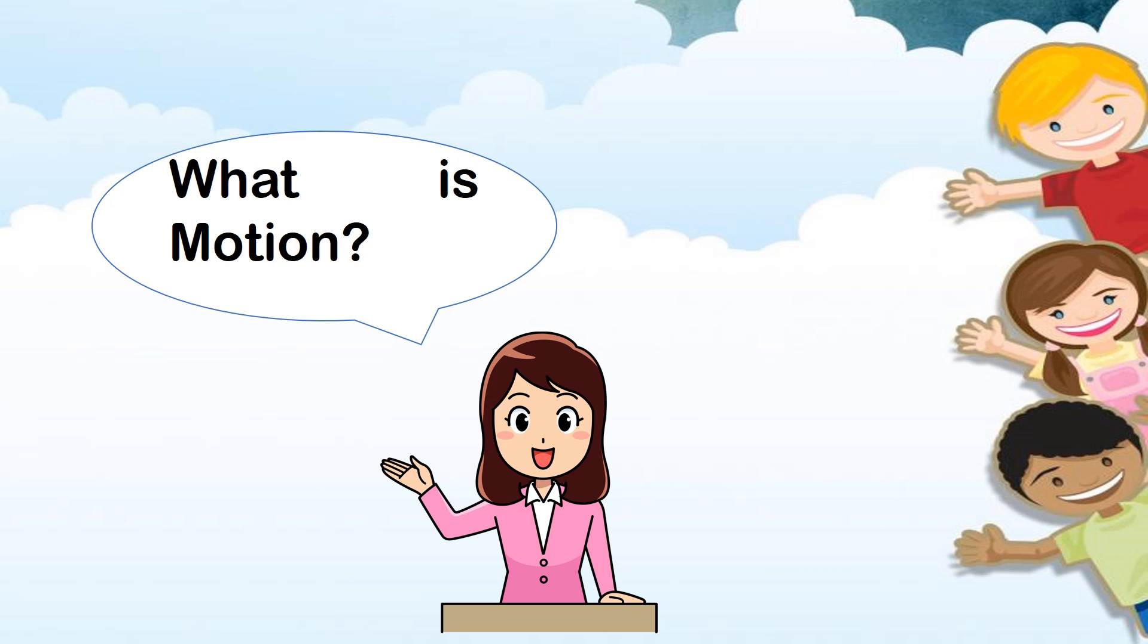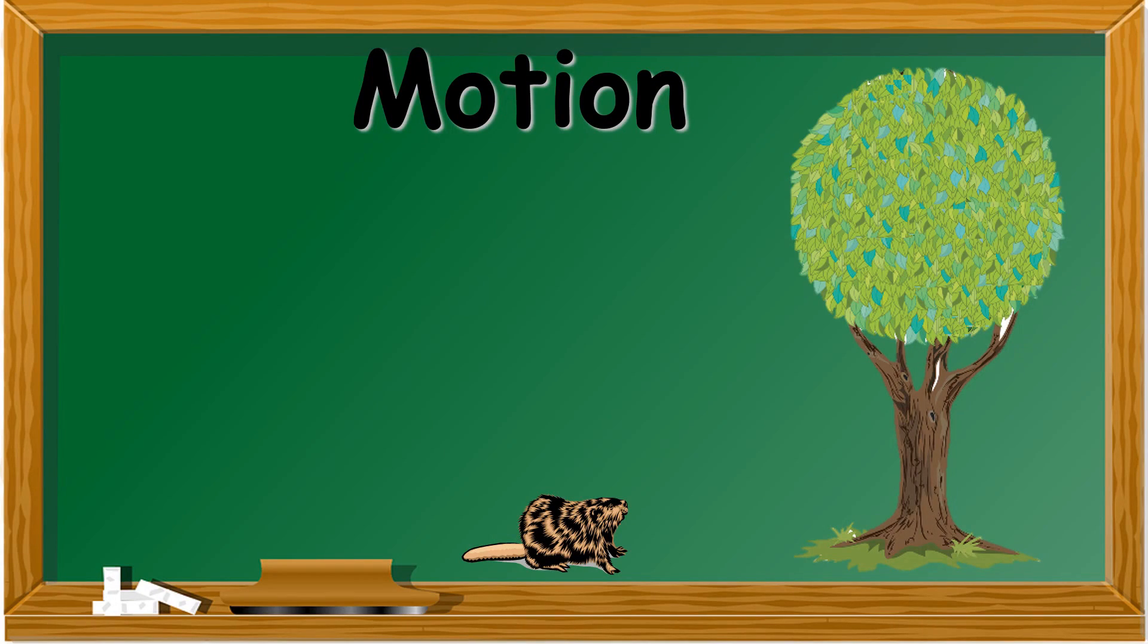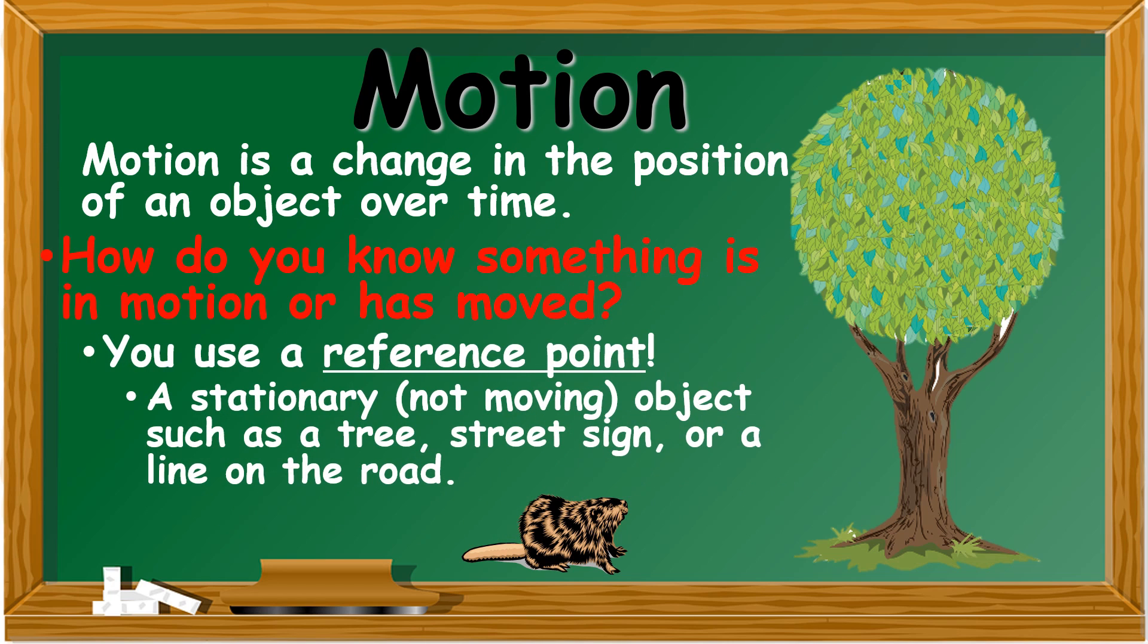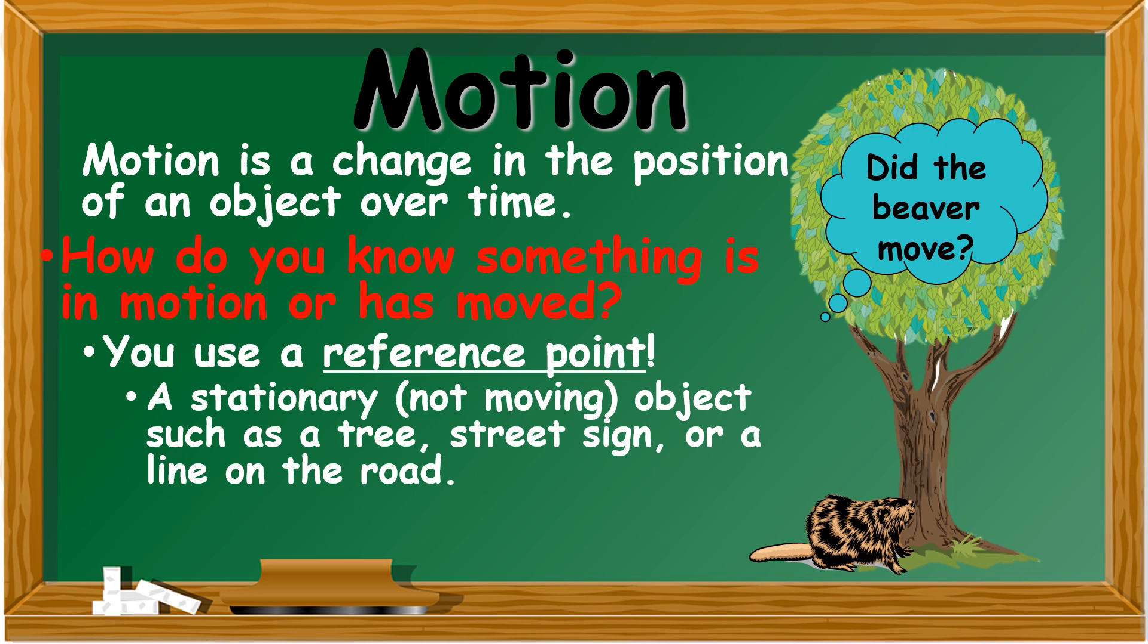What is motion? Motion is a change in the position of an object over time. How do you know something is in motion or has moved? You use a reference point, a stationary object, such as a tree, street sign, or a line on the road.